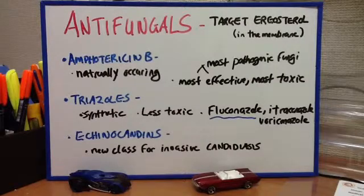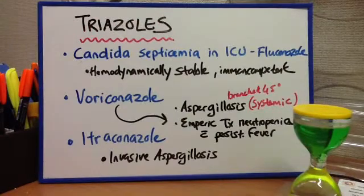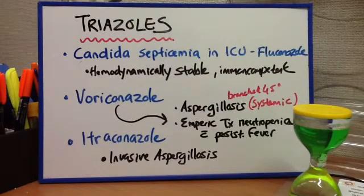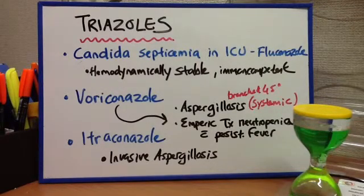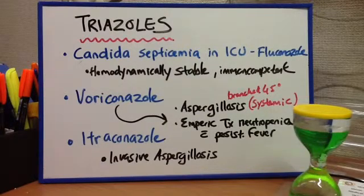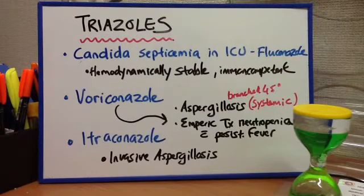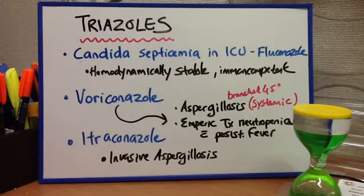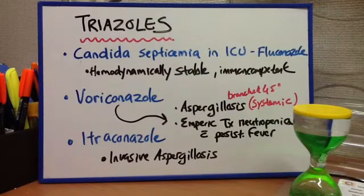Concerning the triazoles: for Candida septicemia in the ICU, you would give fluconazole — this is for hemodynamically stable or immunocompetent patients. Voriconazole would be given for aspergillosis.